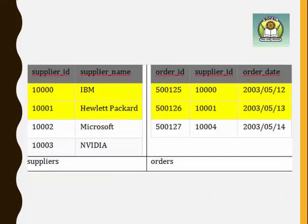Throughout the explanation we are going to use two tables: the supplier table and the orders table. Remember, ORDER is a keyword, so we can't use 'order' as a table name — that's why I'm using 'orders'. The common field between these two tables is supplier_id, and supplier_id 10000 and 100001 are common in both tables. Two rows are exclusive to the first table and one row is exclusive to the orders table.